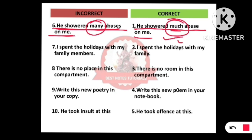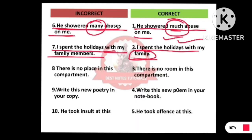Number seven: 'I spent the holidays with my family members.' It should be written as: 'I spent the holidays with my family.' In 'family,' your members, relatives, and other people are already included — family includes all the members who are there in your family.